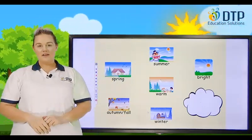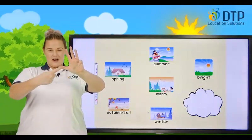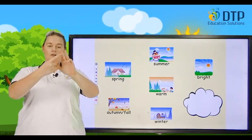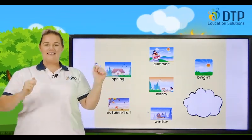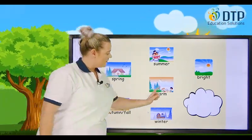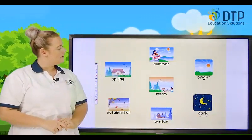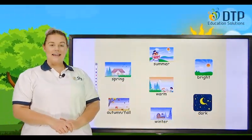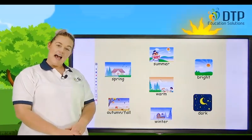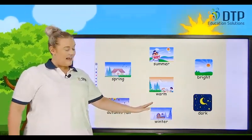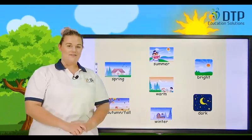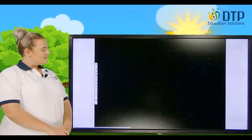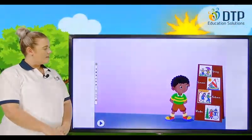So we've got four seasons: Spring, Summer, Autumn or Fall, Winter. Excellent. Dark — nighttime it gets dark. Sometimes in winter it gets darker.